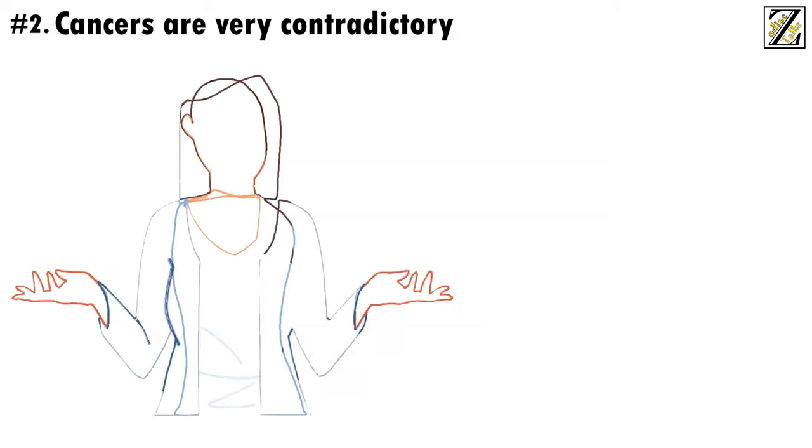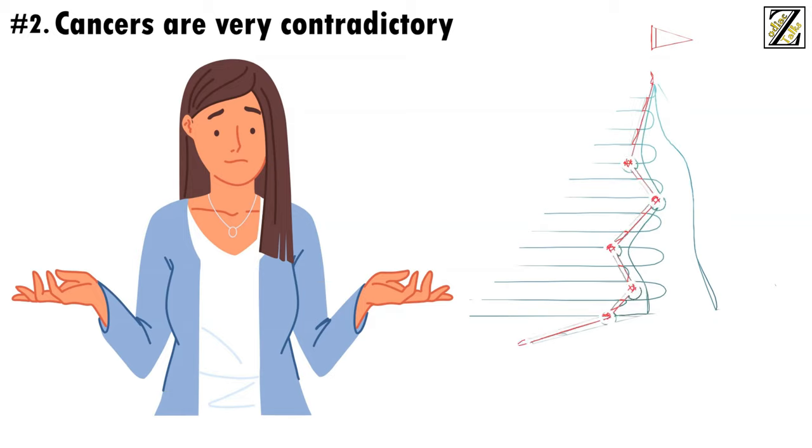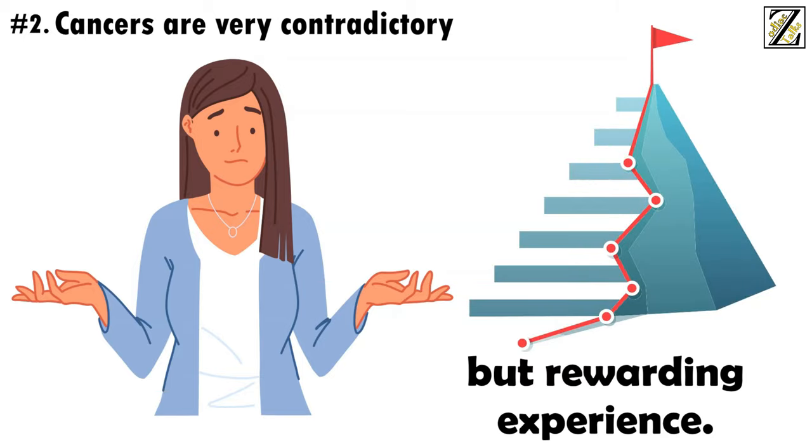Number 2. Cancers are very contradictory. While contradictions are usually associated with Gemini, the truth is that Cancers can be just as confusing. They're complicated, fragile, and no one really understands them other than themselves, which makes trying to get to know them a challenging but rewarding experience.